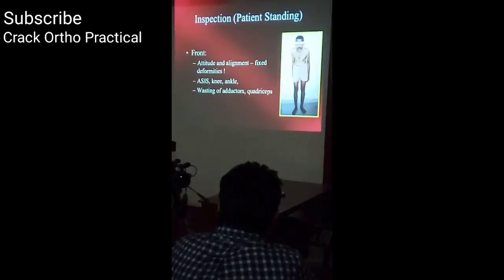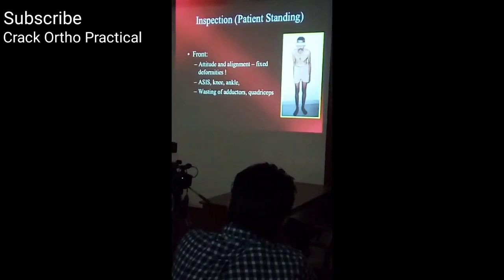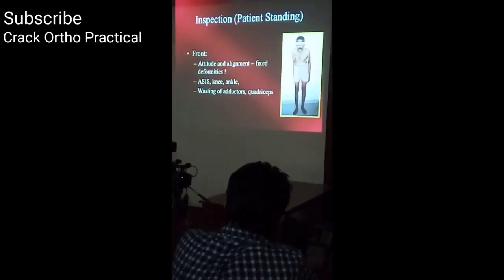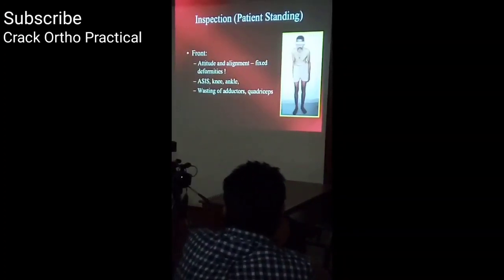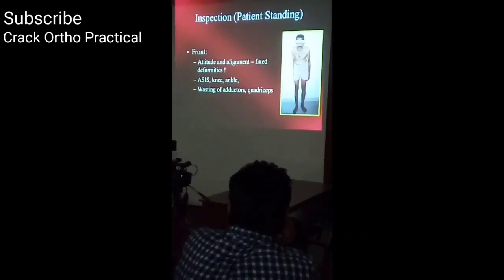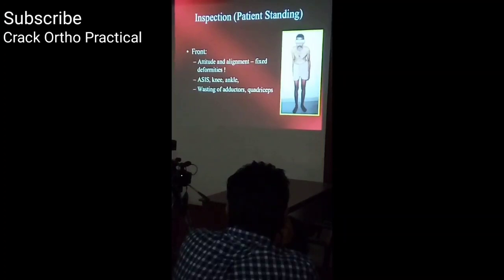Look for attitude and alignment; check fixed deformities. Observe the antero-superior iliac spine, knee, and ankle levels — whether one is at a lower or higher level — and whether there is visible wasting of the muscles, particularly the adductors and quadriceps. Gross wasting of the quadriceps can be judged visually.